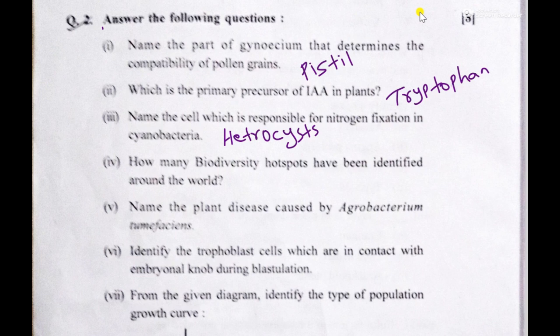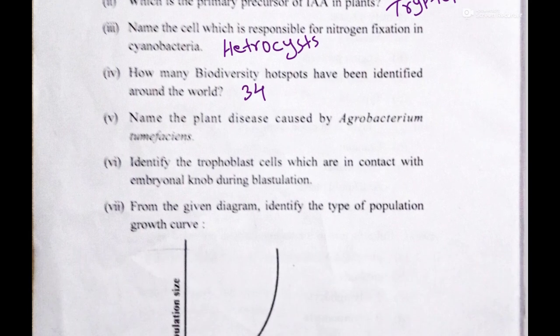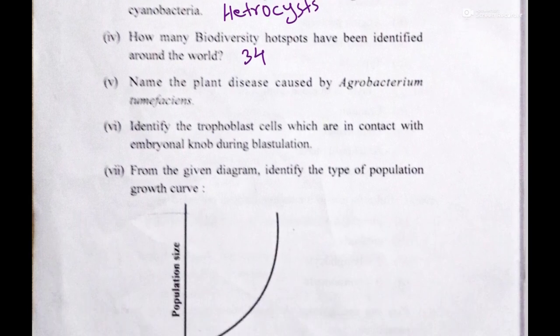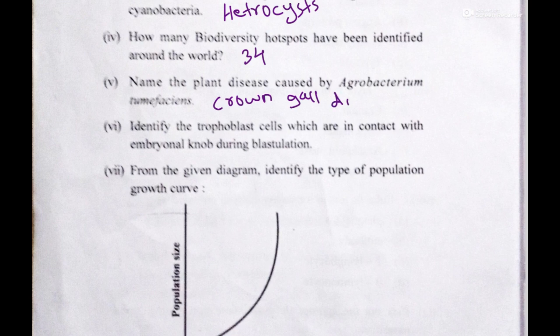The fourth question: how many biodiversity hotspots have been identified around the world? Its answer is 34. The fifth question: name the plant disease caused by Agrobacterium. Its answer is crown gall disease.